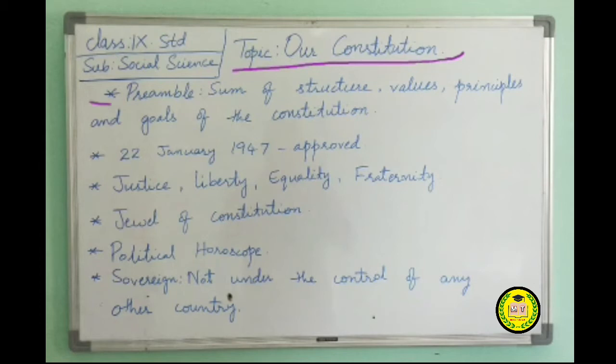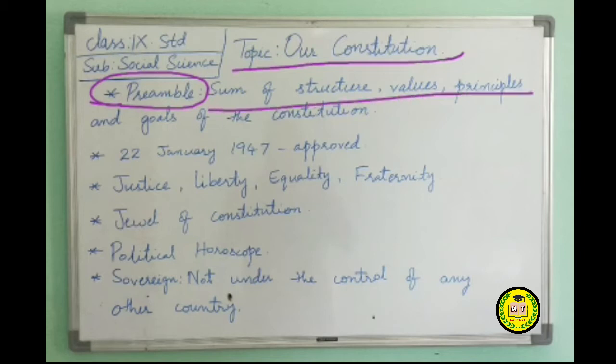The Indian Constitution has combined in itself the best features of different Constitutions of the world and has its own preamble. The preamble contains the fundamental policies and ideals of the Constitution. It is the sum of the structure, values, principles and goals of the Constitution. It is based on the aspirations and ideals of the people of India.